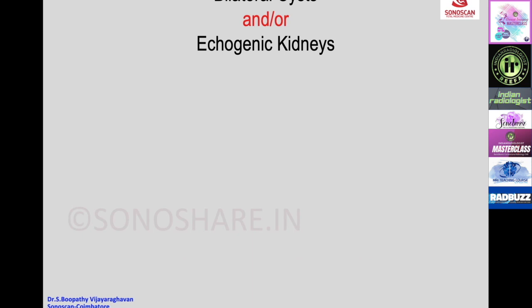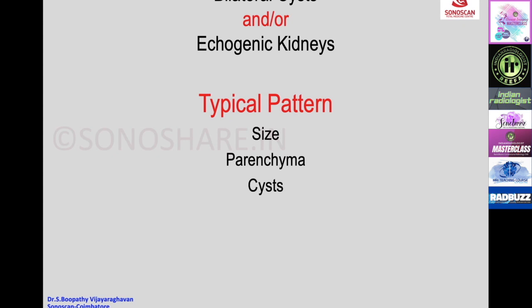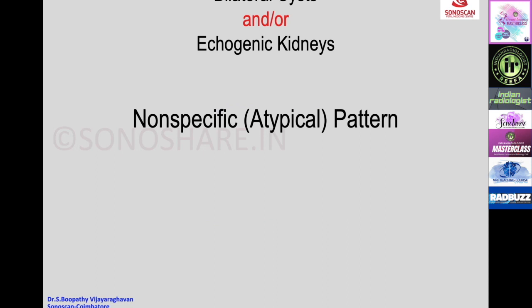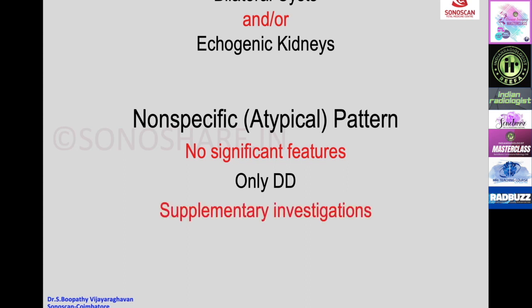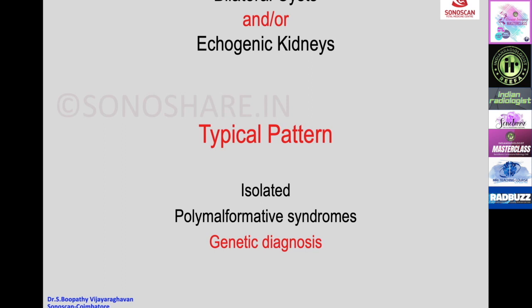Bilateral renal cysts or echogenic kidneys can present as bilateral cysts, echogenic kidneys, or both. These may have a typical pattern or an atypical non-specific pattern. In the typical pattern, size of parenchyma and cysts lead to a specific diagnosis. In the non-specific pattern, there are no salient diagnostic features, and only differential diagnoses can be entertained—supplementary investigations, particularly genetic investigation, are required. Typical bilateral cystic kidneys may be isolated or form part of polymalformative syndromes and may need genetic diagnosis.